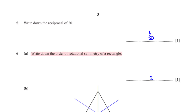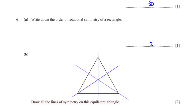Write down the order of rotational symmetry of a rectangle. The order of rotational symmetry for all rectangles is 2. Draw all the lines of symmetry on this equilateral triangle. A line of symmetry is simply a line that cuts a shape into two such that one half is a mirror image of the other. An equilateral triangle has three lines of symmetry.